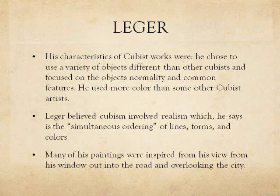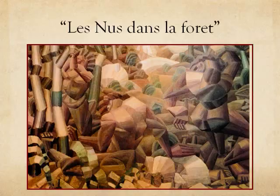Léger began to paint Impressionist paintings under the influence of the artist Edmund Cross. His characteristics of Cubist works were that he chose to use a variety of objects different from the other Cubists and focused on the objects' normality and common features. He used more color than some of the other Cubist artists. Léger believed Cubism involved realism, which he described as the simultaneous ordering of lines, forms, and colors. Before 1910, Léger used a wide variety of colors, but around 1910 he started using the more traditional Cubist colors. Many of his paintings were inspired by his view from his window out into the road and overlooking the city. However, Léger did not always agree with Picasso and Braque — he said it looks like they painted with spider webs.